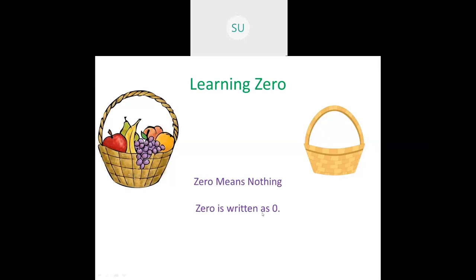Before we ate all the fruits, there were 6 fruits in the basket — 1, 2, 3, 4, 5, 6. But when everyone ate them, there was nothing left. That means there was nothing in the basket. So 0 means nothing. This is the symbol for 0, and 0 comes just before 1. You know that numbers start from 1, 2, 3. So 0 means nothing and comes just before 1.